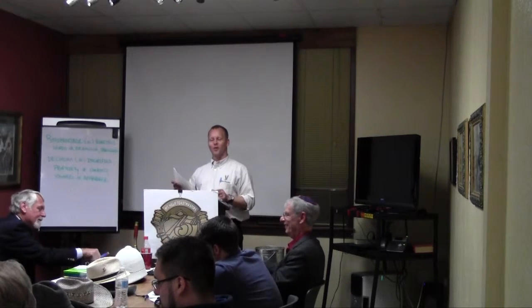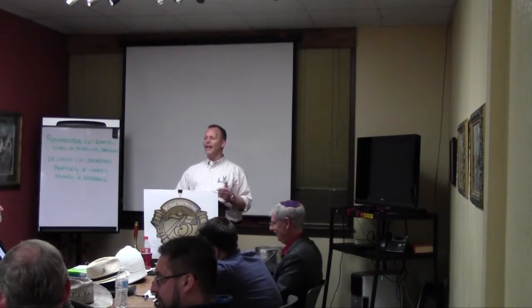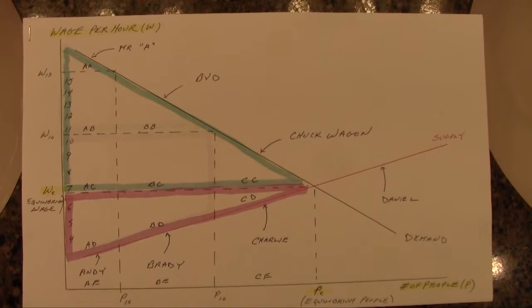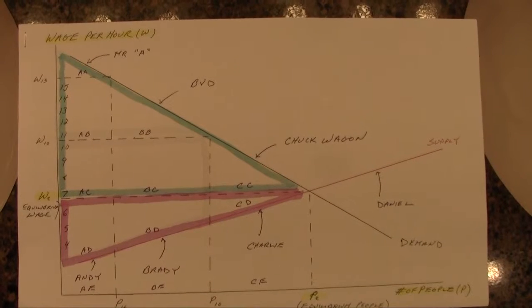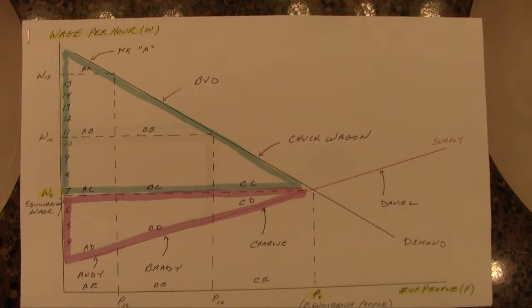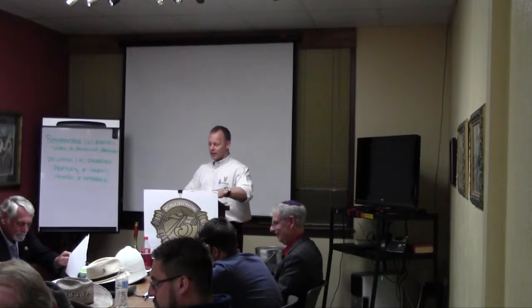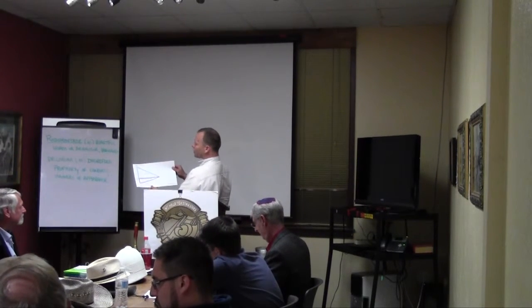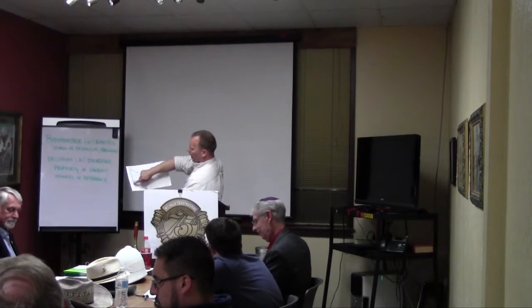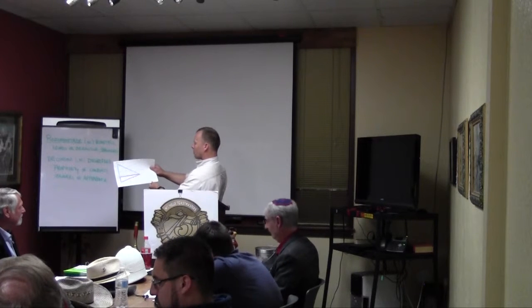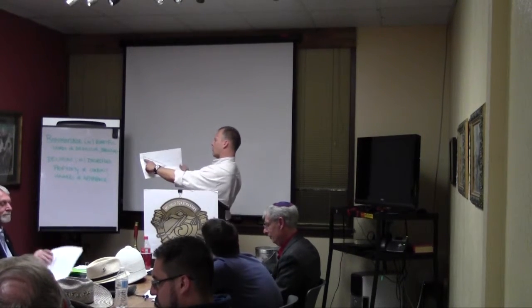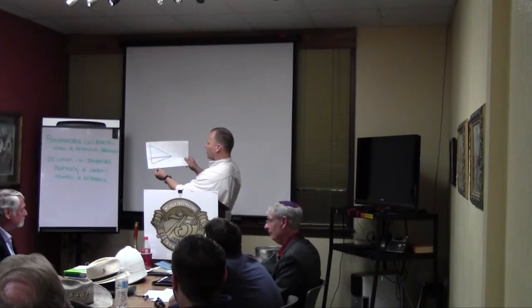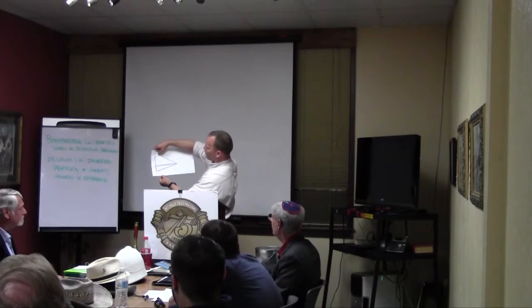I have a graph here. I passed out a copy to all of you — this is a supply and demand graph, one of the very first things taught in Economics 101. You can have a lot of different things on each side of the graph. The one I chose is wage per hour as it goes up, and the one on the bottom is number of people. This is the demand curve here, and at a high wage, you have fewer number of people that a business can afford to pay that high wage.